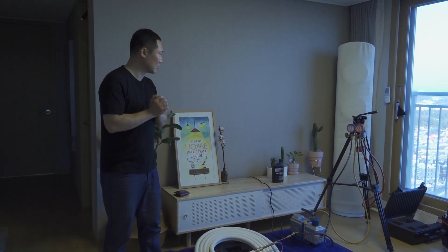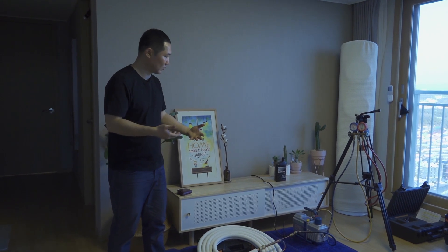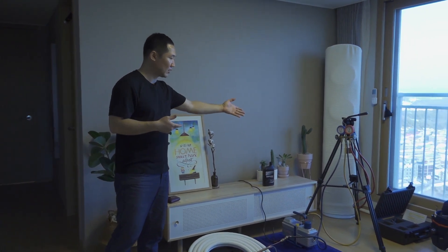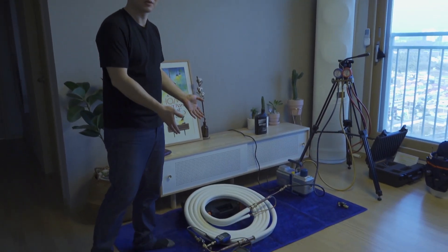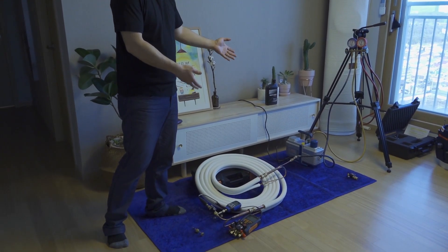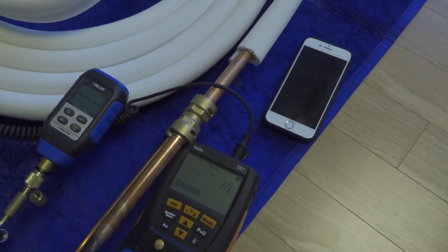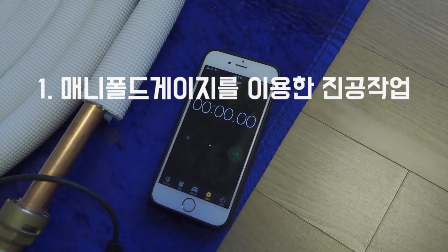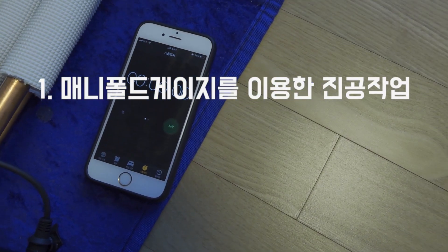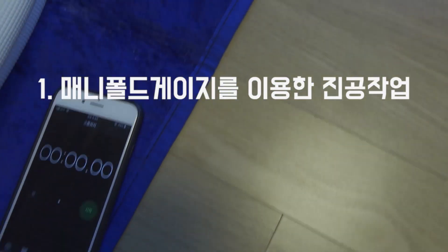First, let's see what happens when we use the most basic vacuum method with the manifold gauge and digital pro gauge together. Now I'll start the vacuum and I'll activate the stopwatch to check the time.